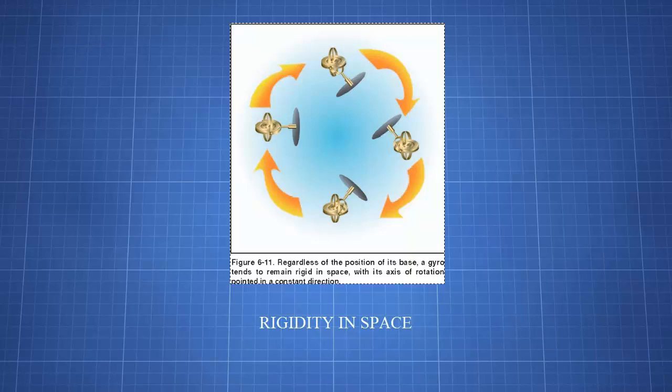With the vacuum systems two main instruments being the attitude indicator and the directional gyro, we also need to be able to understand the principles of gyroscopes. These gyroscopes rely on two fundamental properties which we are going to discuss, the first of which being rigidity in space.